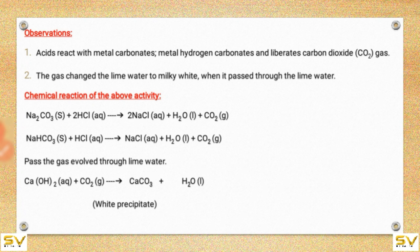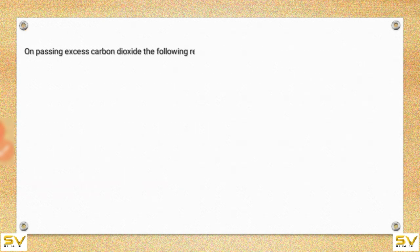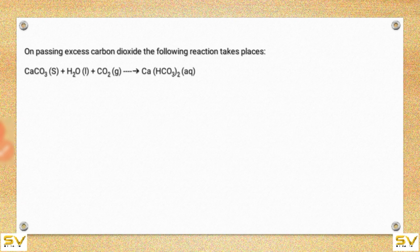CaCO3 is a white precipitate — it is calcium carbonate, which is marble. The gas evolved is passed through lime water, giving a white precipitate, which helps us identify that gas as carbon dioxide. On passing excess carbon dioxide, the following reaction takes place: CaCO3 + H2O + CO2 gives Ca(HCO3)2, which is soluble in water.